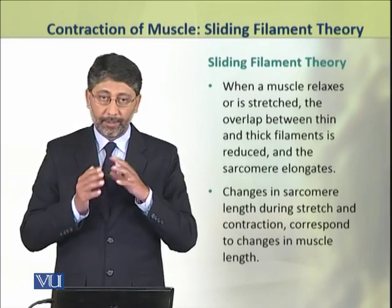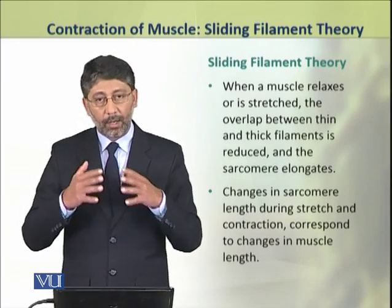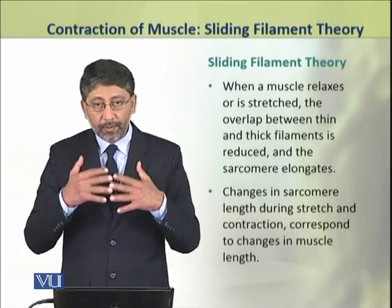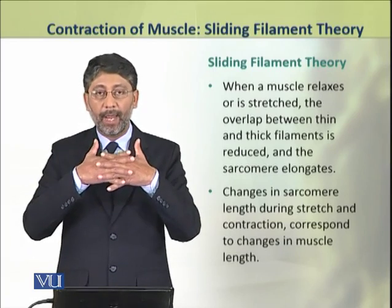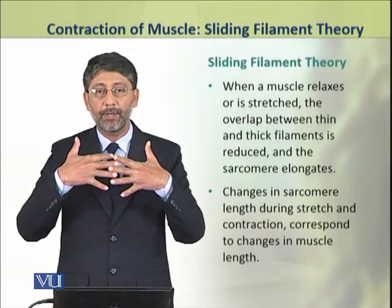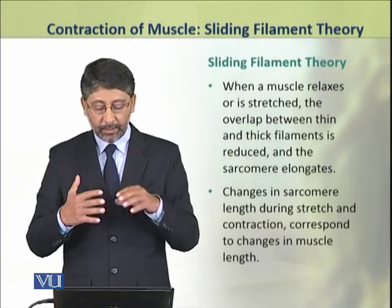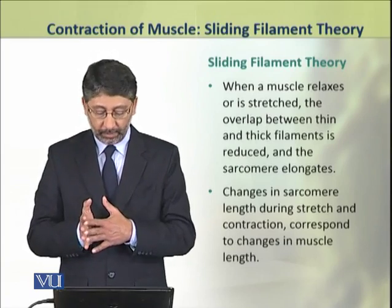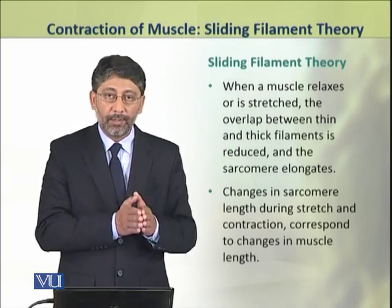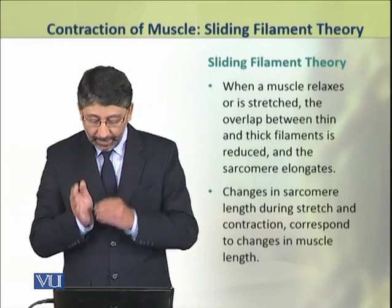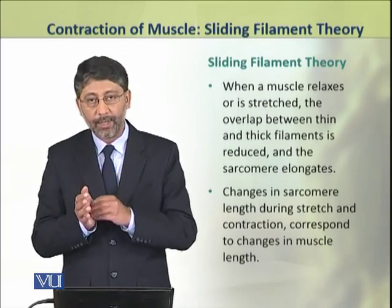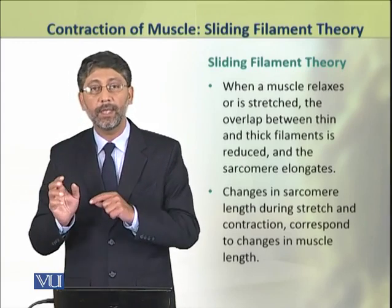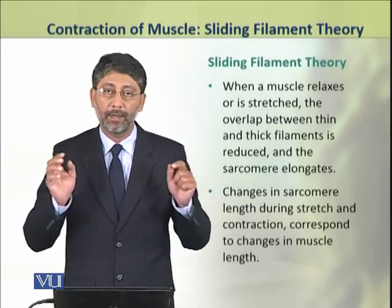When a muscle relaxes or is stretched, the overlap between the thin and thick filaments is reduced. As a result, the sarcomere elongates. These changes in sarcomere length during stretch and contraction correspond to the changes in overall muscle length.